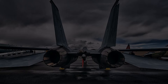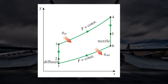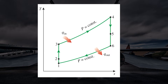Analyzing the real cycle is a little bit complicated. Thus, we use the idealized model where all devices such as the compressor, turbine, diffuser, and nozzle are totally isentropic, and heat transfer takes place isobarically.